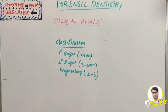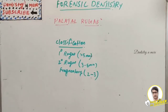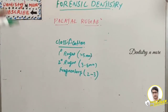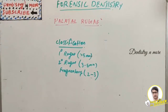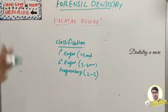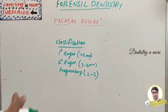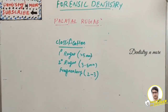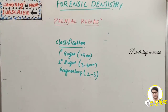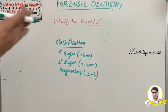Hello everyone, welcome back to another session in Dentistry and More. We are continuing our age estimation and person identification methods in forensic dentistry. The last two sessions covered dental age estimation through radiographical and morphological methods — the Demirjian method and the Gustafson method of dental age estimation.